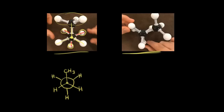Next let's draw the eclipsed conformation as a Newman projection. The front carbon is represented by a point. We have a CH3 methyl group going off to the right, a hydrogen going down — I'm going to draw it a little off-center, slightly to the left, just like in the picture, to make it easier to see the bonds in the back. And then we have a hydrogen going in the upper-left direction. Now let's think about the back carbon. We can't see it because the front carbon is eclipsing it, but we know the back carbon has three hydrogens attached to it.